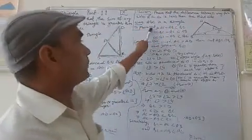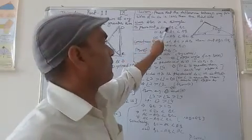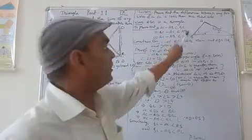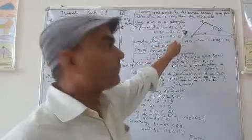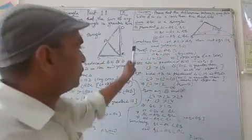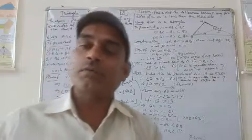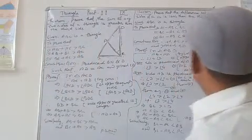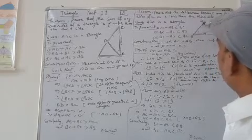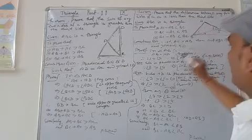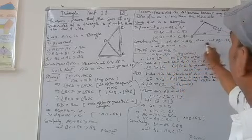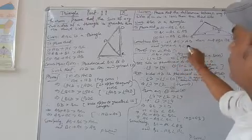We have to prove that AC minus AB is less than BC, and AC minus AB is less than AC. To prove this, we cut a point D on AC such that AD equals AB. Now AD is less than BC, and AB equals AD by construction.